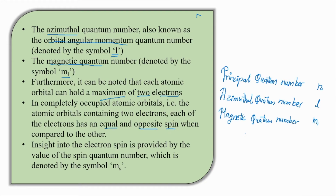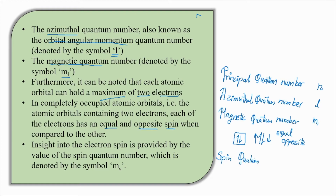Let me just draw it for you. If I have this particular orbital, it is denoted like this — this is spin in one direction, this is spin in another direction. This spin is going upward, this spin is going downward. This is equal but opposite in direction, so it has an equal and opposite spin when compared to each other. Insight into the electron spin is provided by the value of the spin quantum number, which is denoted by ms.